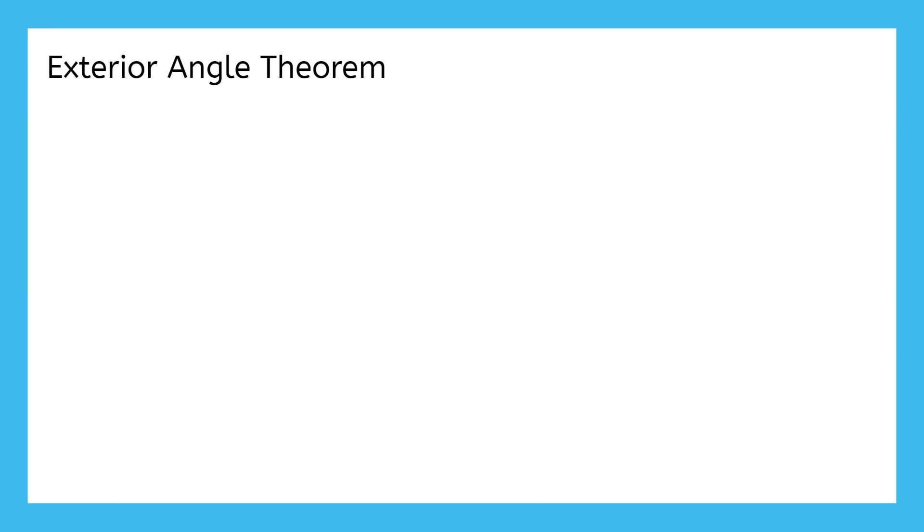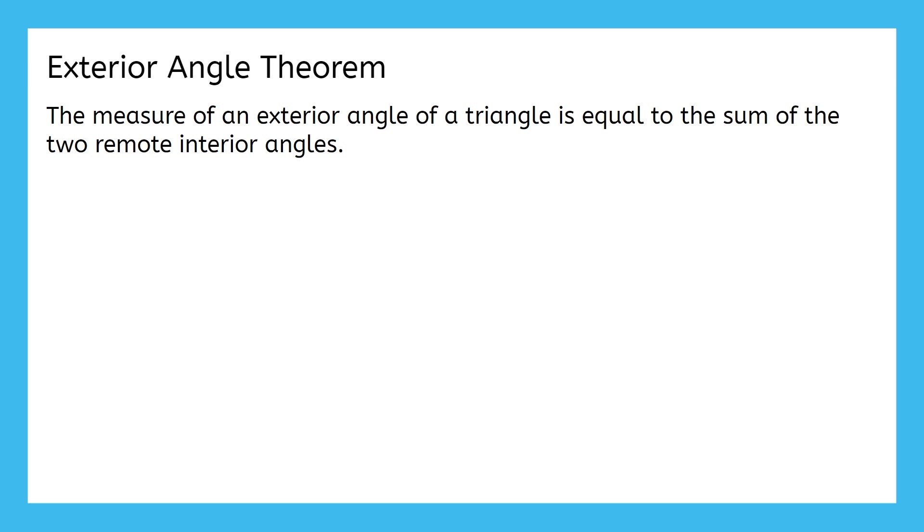Let me start by just laying it all out for you. This is the Exterior Angle Theorem. It says, the measure of an exterior angle of a triangle is equal to the sum of the two remote interior angles. Uh, what?